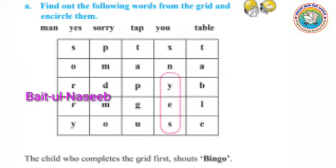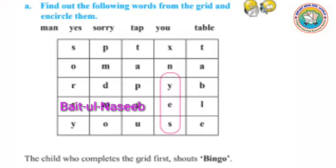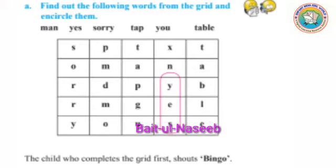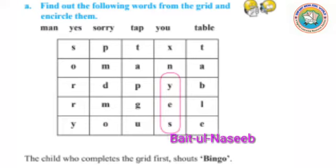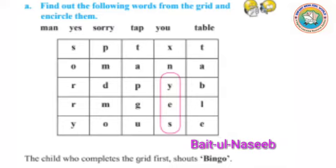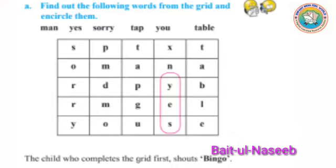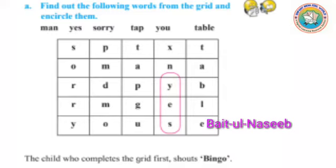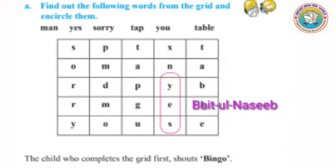अब इस grid को देखिए बेटा, यहाँ पर आपको words को तलाशना है और उनको circle करना है। जैसे आपको यहाँ बताया गया है — 'yes' को circle किया हुआ है। इसी तरह तमाम words को आपको circle करना है। और जिसका पहले हो जाए वो बच्चा 'Bingo' ऐसा करके चिल्लाएगा। The child who completes the grid first shouts 'Bingo'.